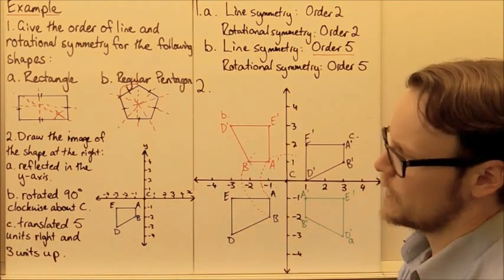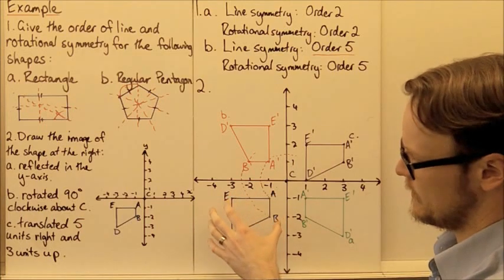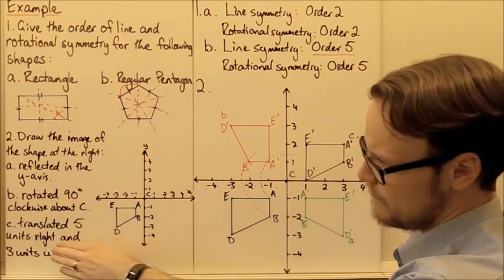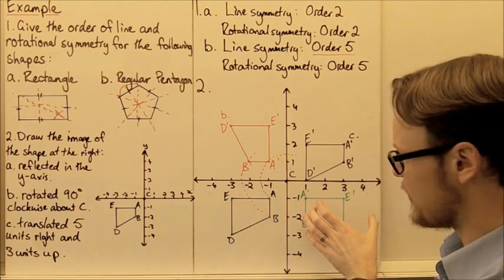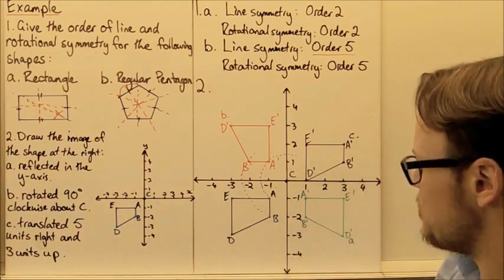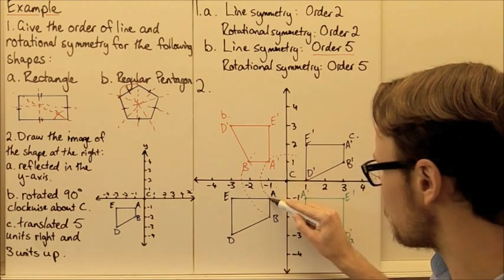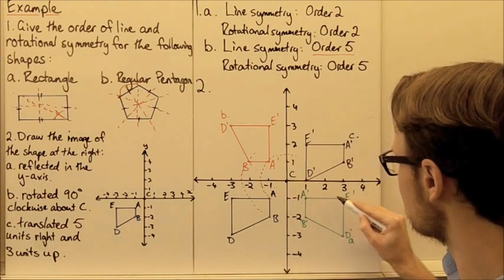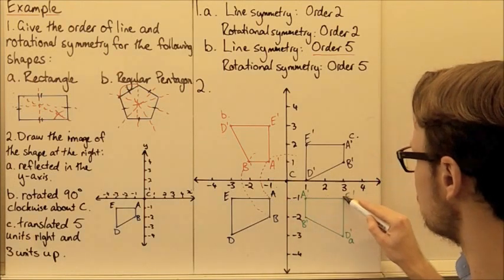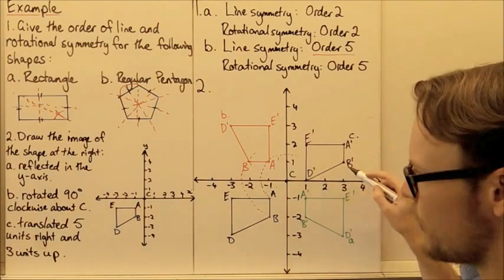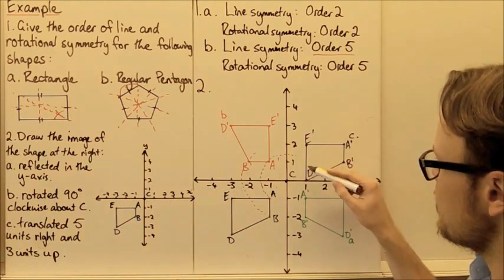For our translation, all we're doing is shifting our shape — shifting it five units to the right and three units up. Looking at point A, counting five units to the right — oh, sorry, I've made a mistake here and not answered the question properly.